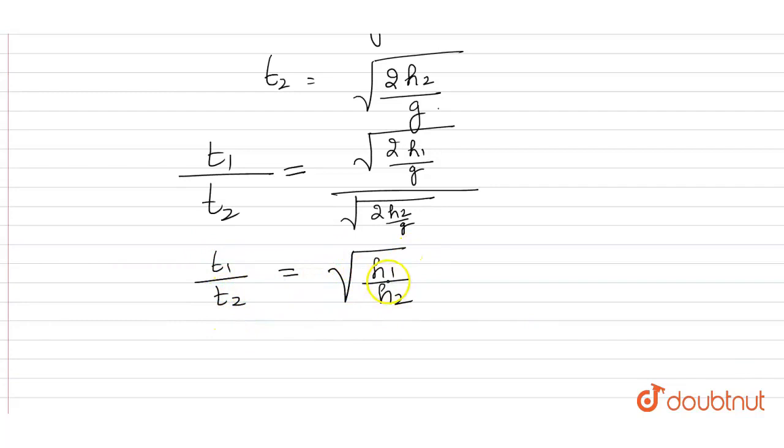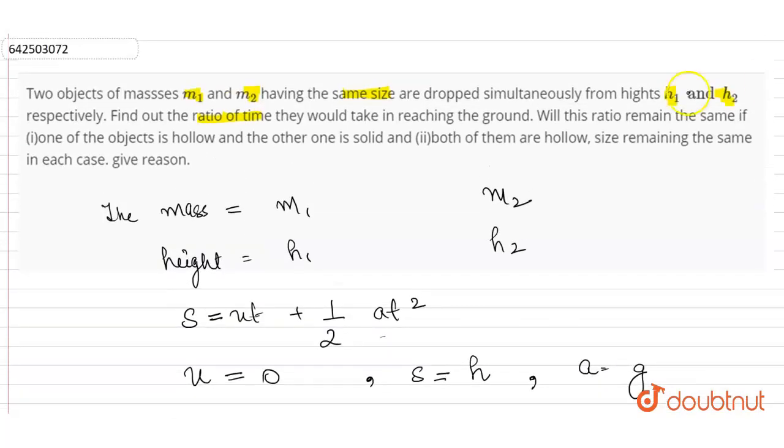After this they had asked us: will this ratio remain the same if one of the objects is hollow and the other one is solid? So we see acceleration due to gravity is independent of mass of falling body, so the ratio will remain the same. Let us write this here.